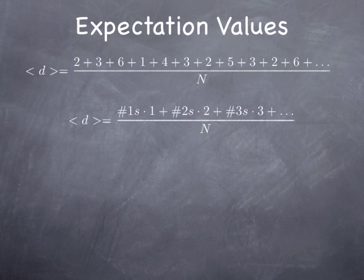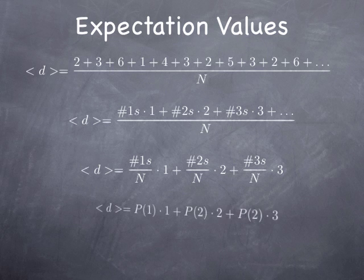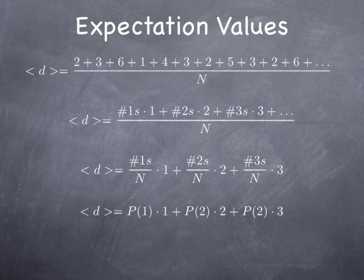You end up dividing by N, the number of trials — so it's obviously the same thing. If you rewrite that slightly differently, breaking terms out as the number of ones divided by N, number of twos divided by N, number of threes divided by N, and so on, you'll notice that the number of ones divided by the number of rolls is nothing other than the probability of rolling a one, and the number of twos divided by the number of rolls is the probability of rolling a two. In the limit that N is very large — millions or billions — we can think of the expectation value of the die as the probability of rolling a one times one, plus the probability of rolling a two times two, and so on.